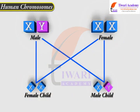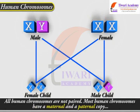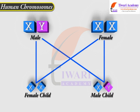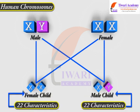The explanation lies in the fact that all human chromosomes are not paired. Most human chromosomes have a maternal and a paternal copy, and we have 22 such pairs. But one pair, called the sex chromosomes, is odd in not always being a perfect pair. Women have a perfect pair of sex chromosomes, both called X.